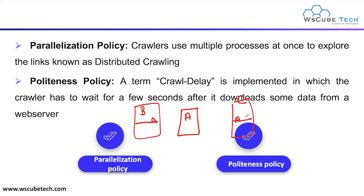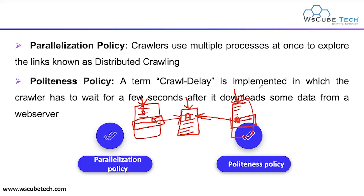In the parallelization policy, crawlers use multiple processes at once to explore links, known as distributed crawling. For example, if your website link is mentioned in website B and also in website C, then when the web crawler reads website B or C it finds your link and visits your website again, reading all the information from multiple sources.